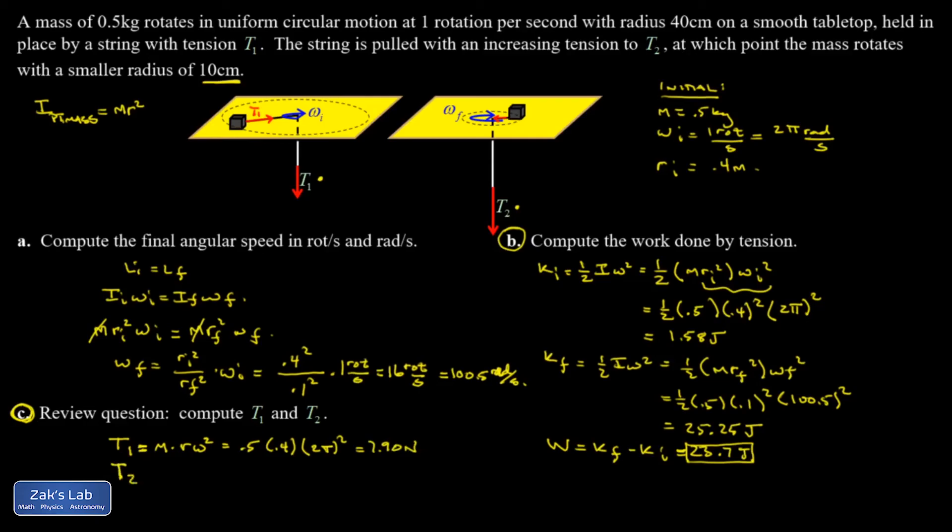And then T2 is mr omega squared for the final state. That's 0.5 times 0.1 times 100.5 radians per second, all squared. And that gives me 505 newtons.